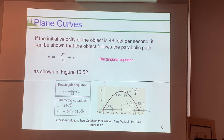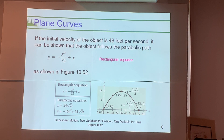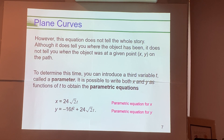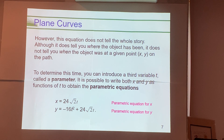The information we know from this function is how far it is away horizontally, how high it is, and how those relate to one another. But there's a key component that's missing. This equation does not tell the whole story — although it tells us where the object has been, it does not tell us when the object was at a given point. This rectangular equation doesn't provide us as much information as we'd like.